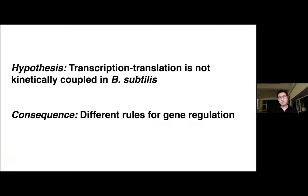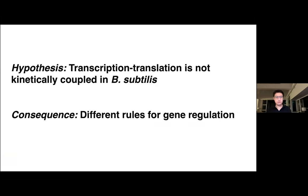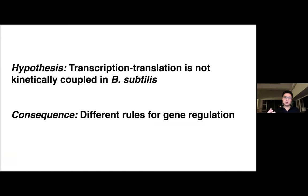He realized this would pose a problem because the upstream ribosome would in principle block the hairpin from forming, making termination non-functional. But he could quantify that the polymerase terminates 98% of the time, as if there's no ribosome behind the RNA polymerase. This led to the hypothesis that transcription and translation are not kinetically coupled in Bacillus subtilis — which would have really important consequences, leading to a completely different set of rules for gene regulation.